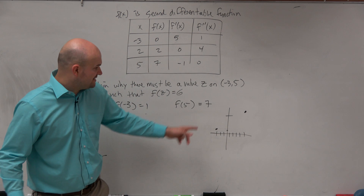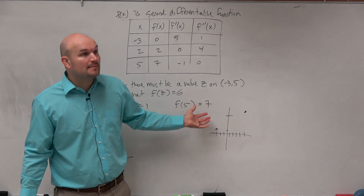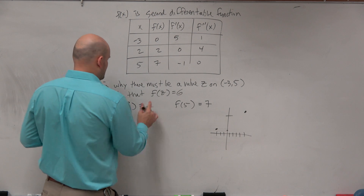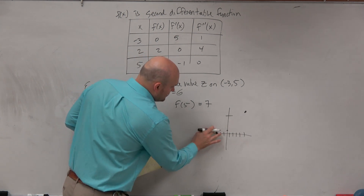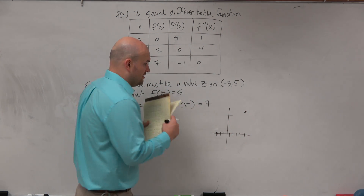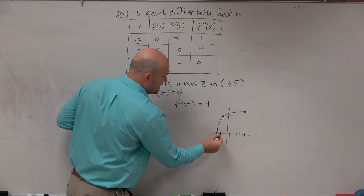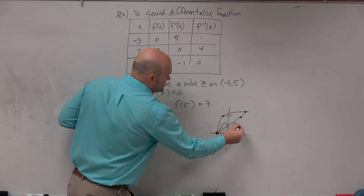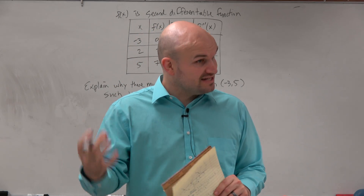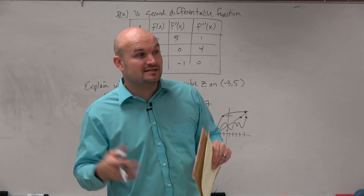Is there some value where the graph has to cross to 6? It has to. So at negative 3, we're down here at 1, and then we're ending at f of 5, which is 7. At some place, we're crossing 6. We don't know when we're crossing 6 — it could go like this, cross 6 there, or cross 6 here. We have no idea, but we know it has to cross 6 because the function is continuous and differentiable. It's continuous on the closed interval and differentiable on the open interval.